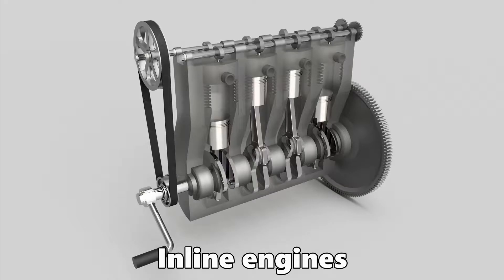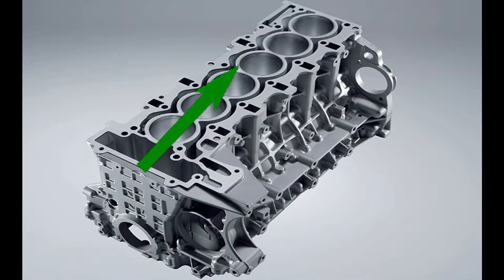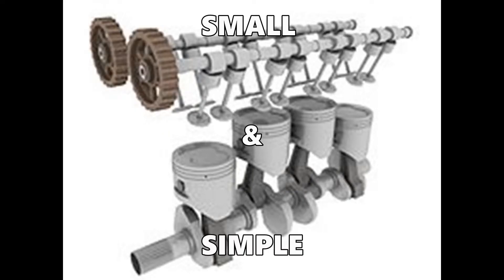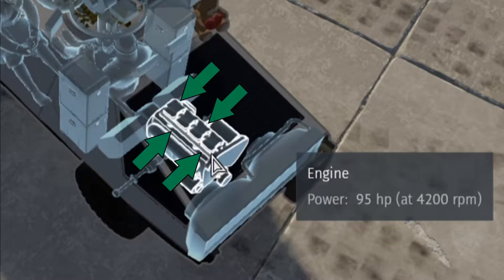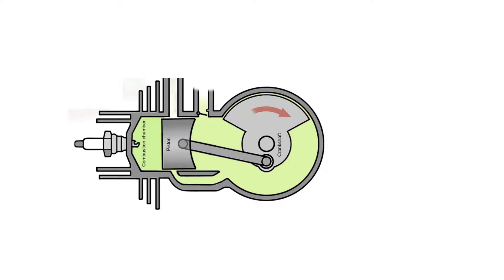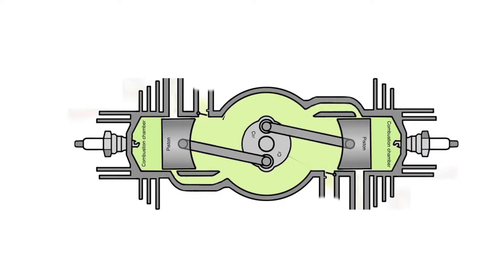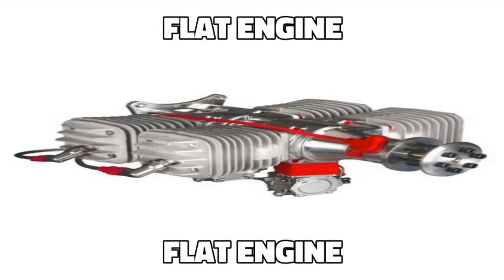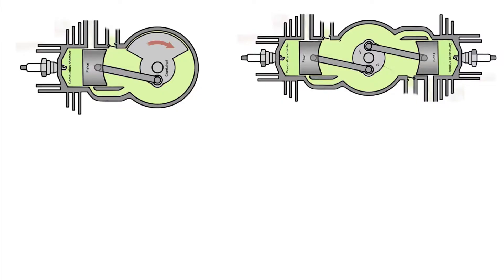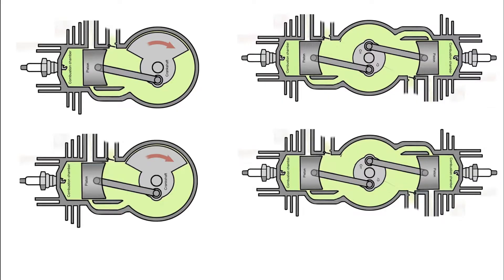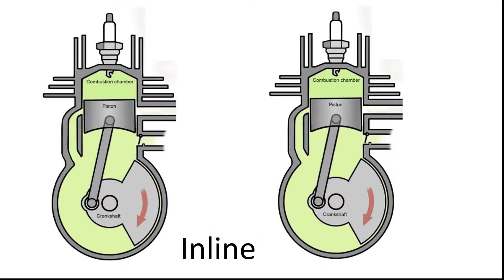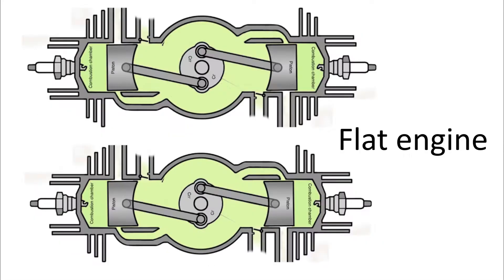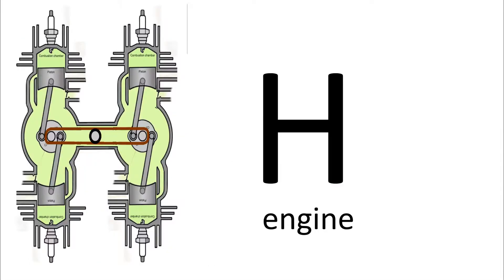Inline engines, or straight engines, have all of the cylinders along the crankshaft without any offset. They are fairly compact and simple, and a straight 4 is one of the most common types of car engine. If you mirror the cylinders of an inline engine across the crankshaft to the opposite side, you get a flat engine — also very compact. Inline and flat engines can be doubled up: two inline engines make a U engine, and two flat engines connected make an H engine. Both have two separate crankshafts connected by a gear system into a single output shaft.